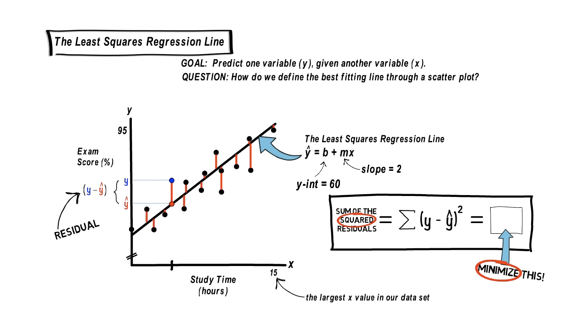So, we've got our least squares regression equation for this data, y-hat equals 60 plus 2 times x. We'll go ahead and use that in the next lesson.